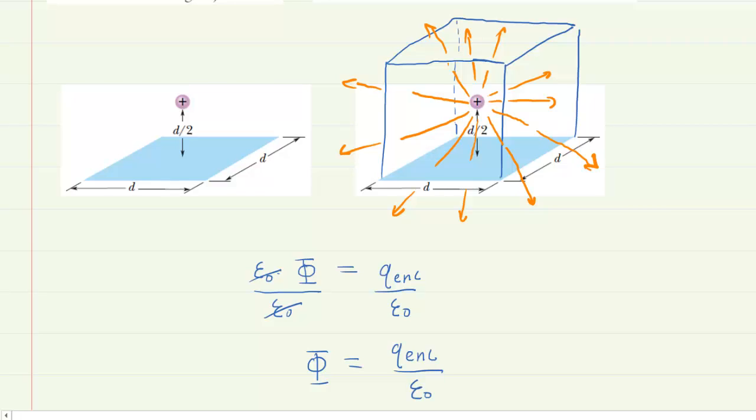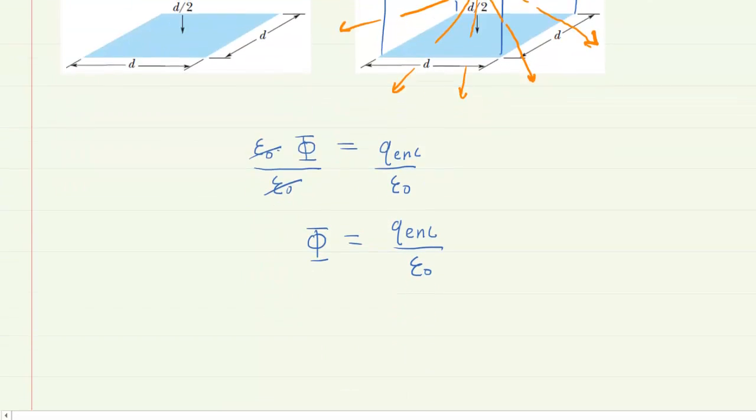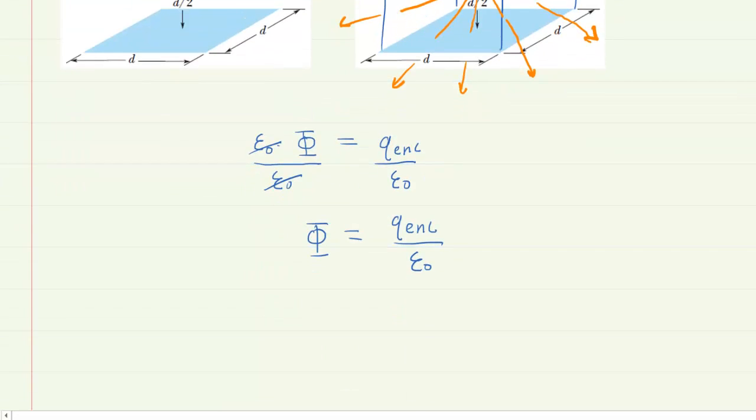Now again, we don't want the total flux. We want it through just one side of the square or cubic Gaussian surface. So to get just the electric flux through one side of the cube, we would basically just take the total flux and divide it by six. So that's exactly what we're going to do is divide by six.